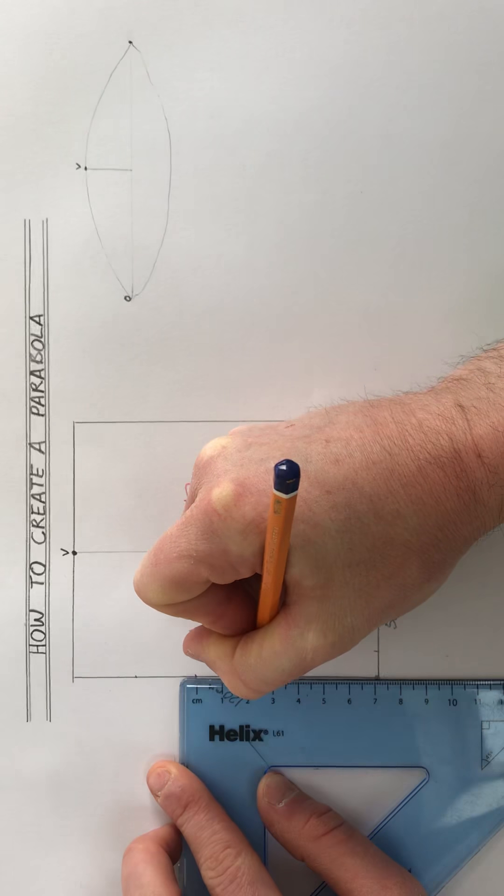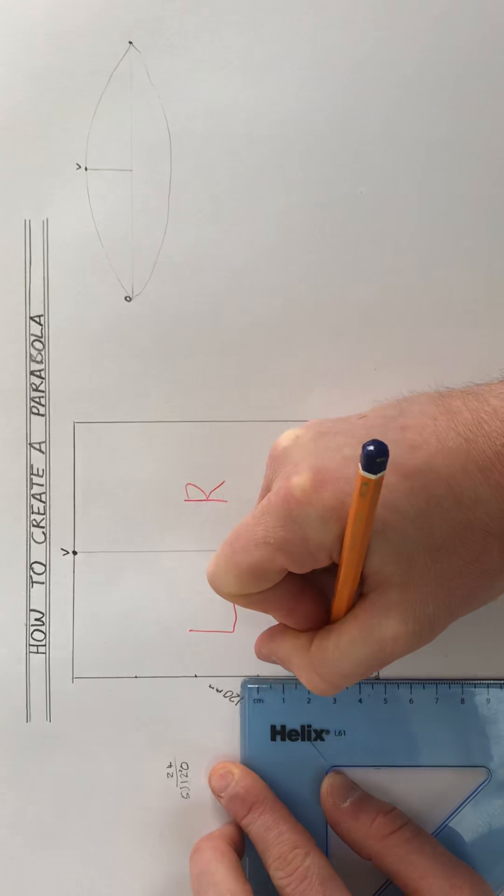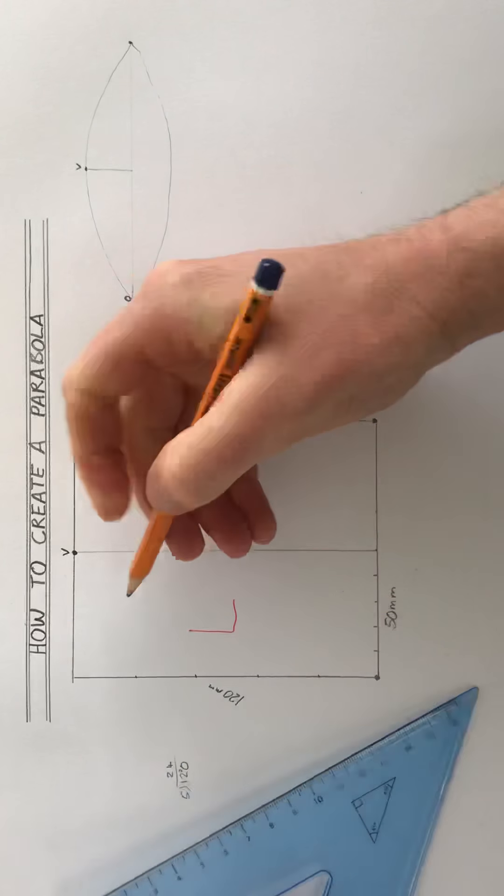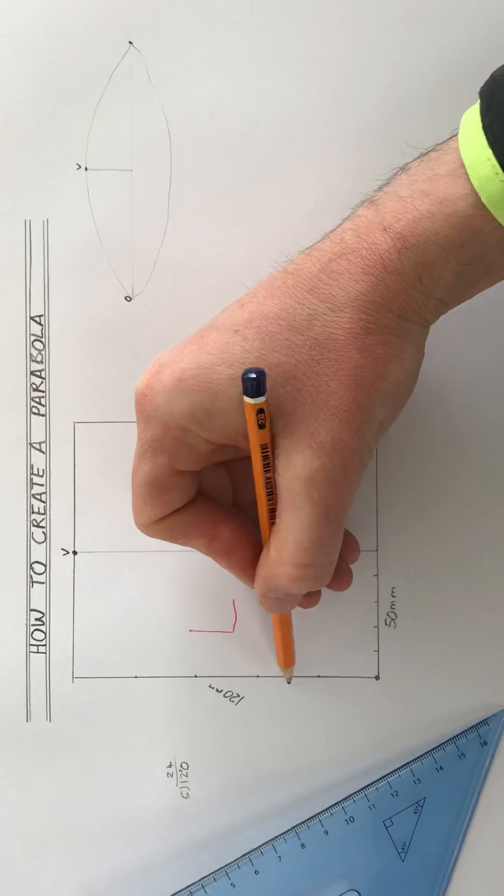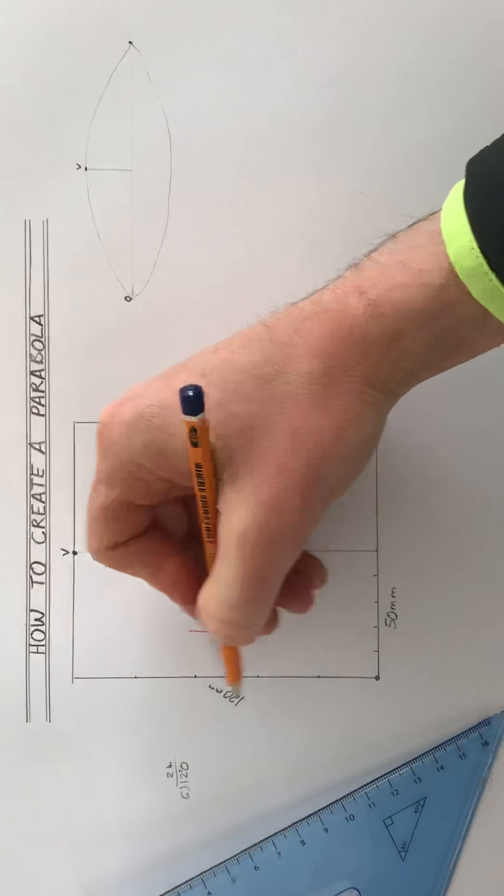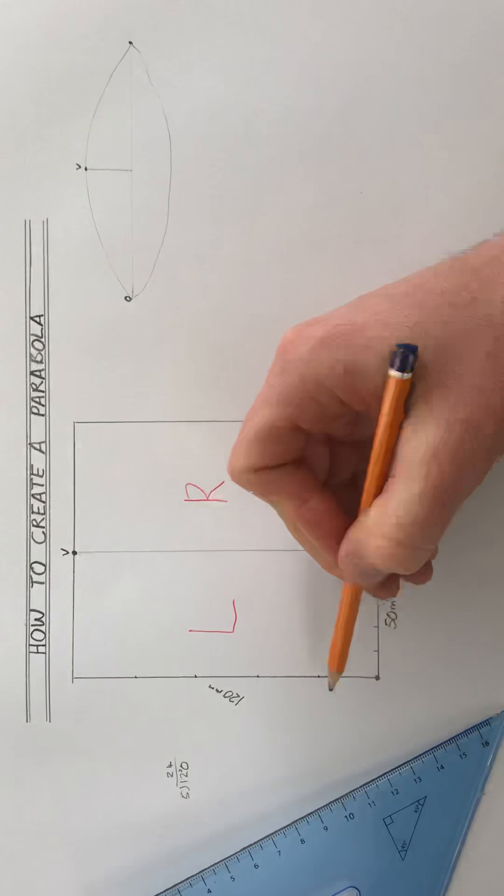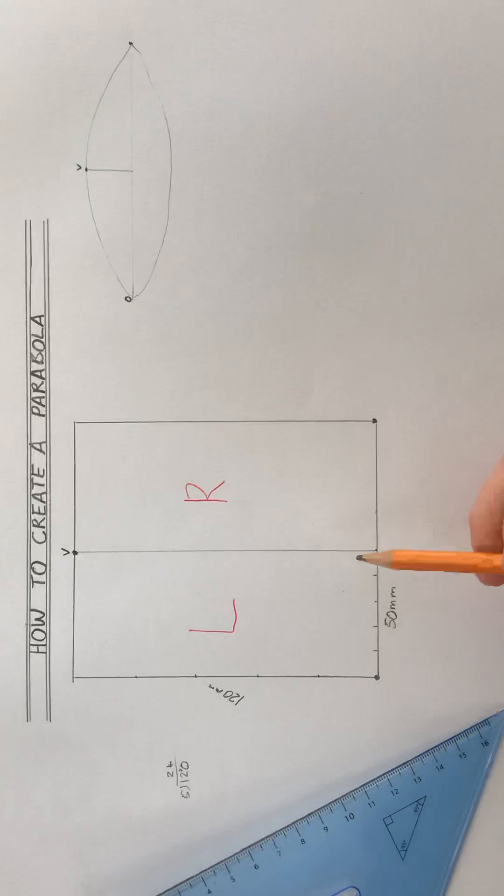120 divided by 5, if you wanted to calculate it: 5 into 10 goes twice with a remainder of 2, 5 into 20 goes 4 times, so it's 24. So 24, 24, 24, 24, and 24. So I have 1, 2, 3, 4, 5 equal gaps, each gap 24. So the height is divided up into 5 and the width is divided up into 5.